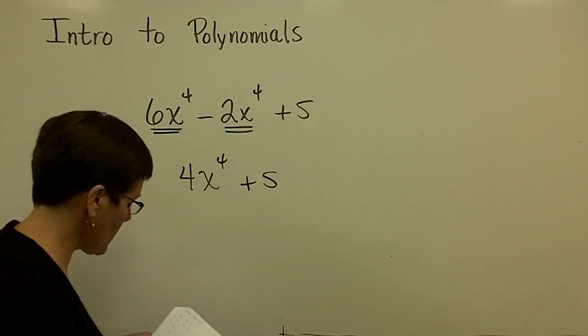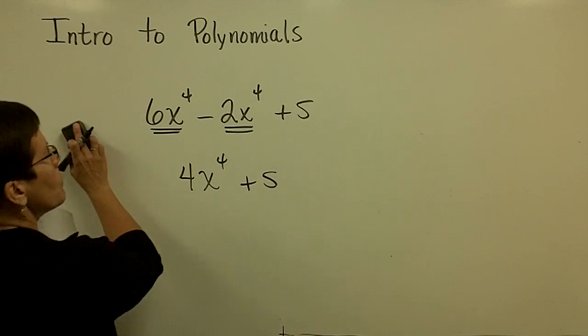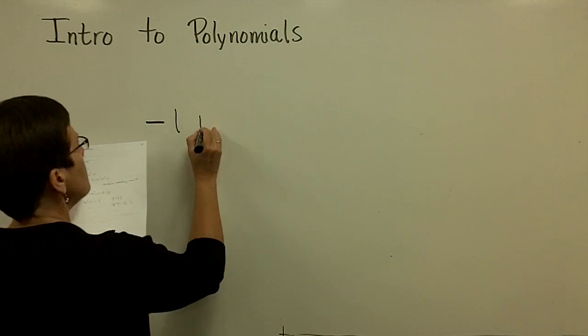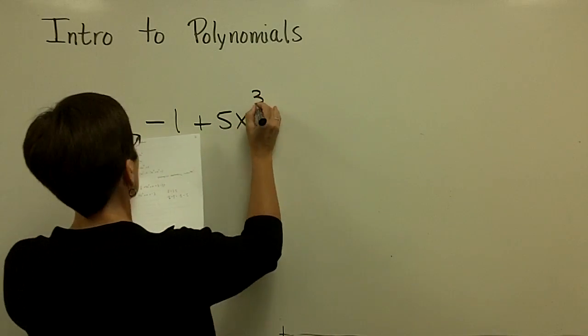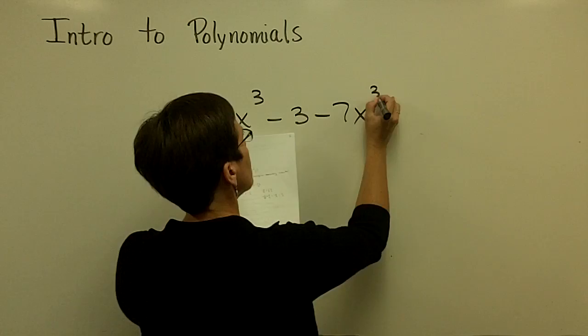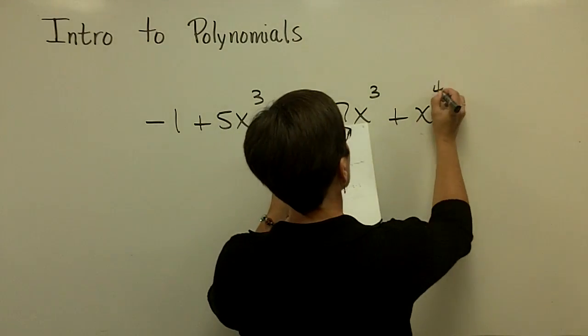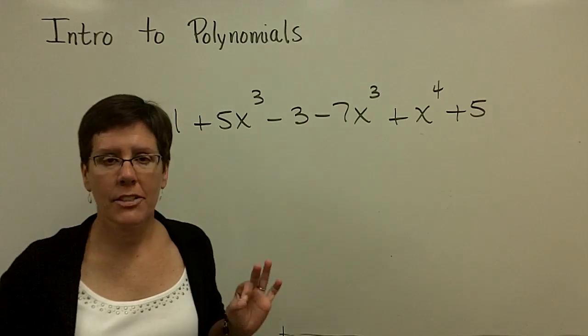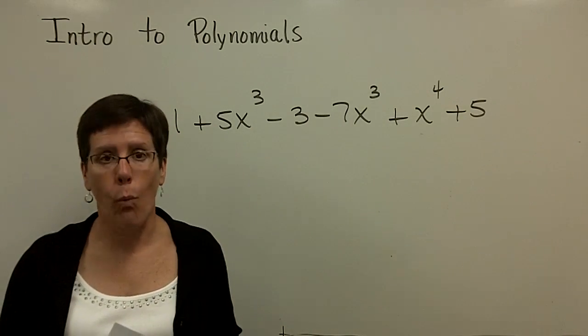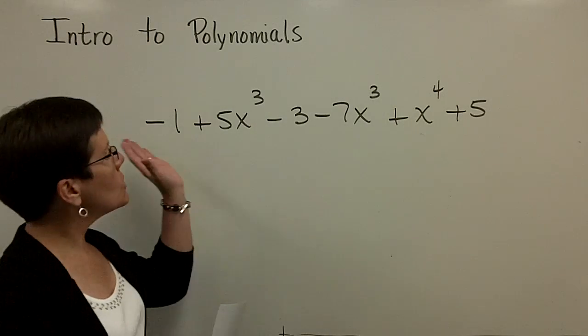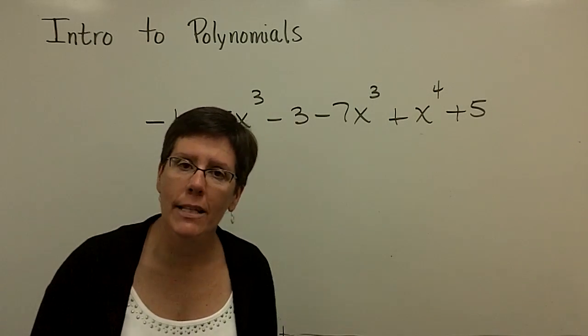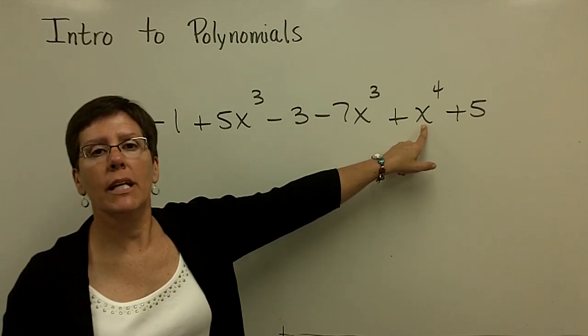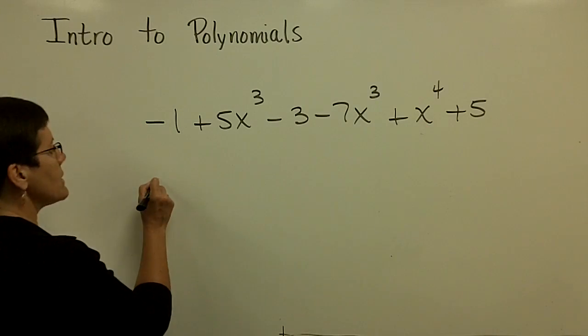Let's go with one that's got more exponents. So I've got -1 + 5x³ - 3 - 7x³ + x⁴ + 5. I like to focus on putting this in descending order of the exponent while I'm collecting like terms. So I look for the terms with the greatest exponent. That would be this one. And there's only one of those. There's nothing to be collected.